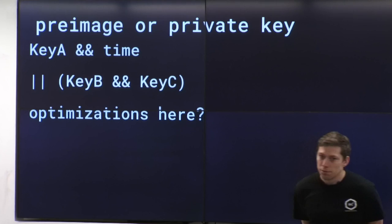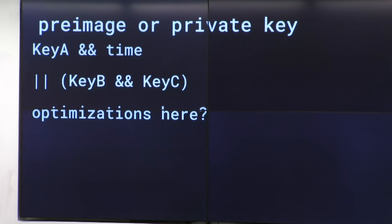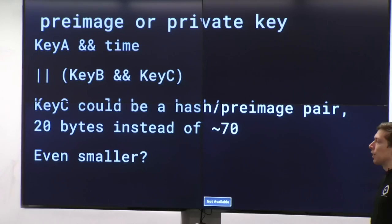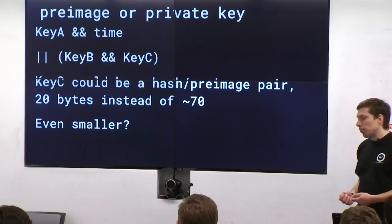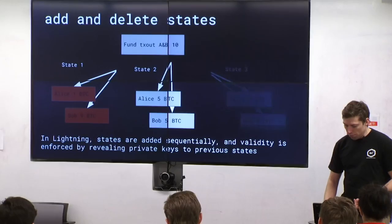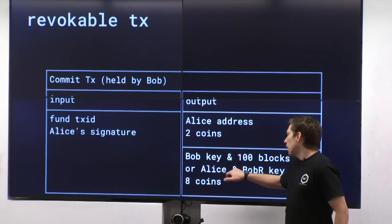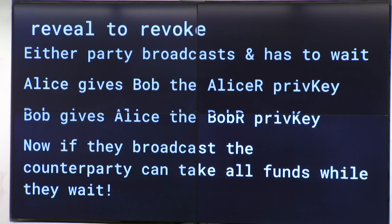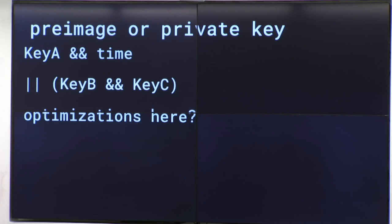What are some optimizations here for the revealing part — any way to make that smaller and more efficient? One idea is to use a preimage instead of a signature. You're just revealing something; you're not actually committing to any data. So when Bob reveals his secret, he could just provide a preimage. Instead of like 70 bytes for a signature, you get down to like 20 bytes for a hash and a preimage. But you can do it even smaller — you can combine keys.